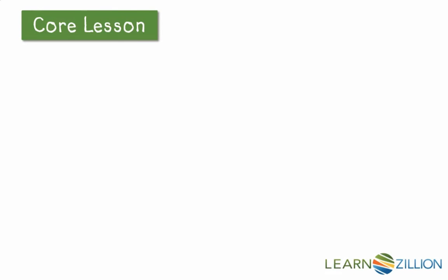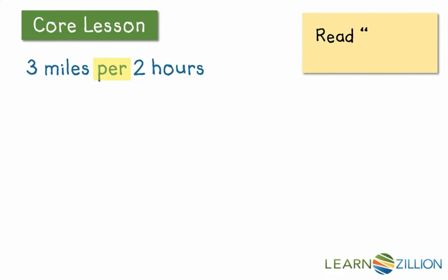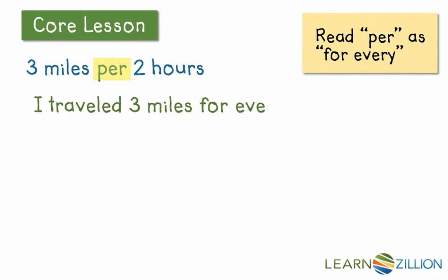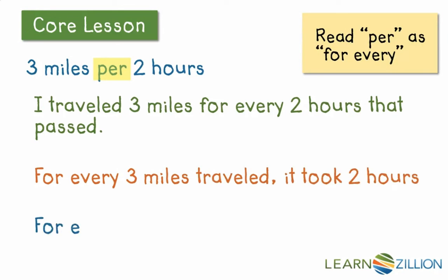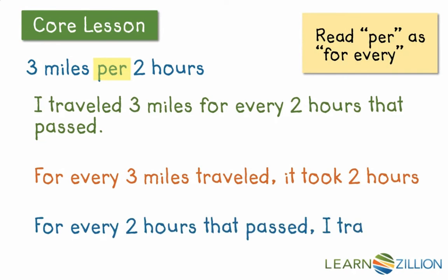Another difference you might have noticed between rates and standard ratios is the word "per" — three miles per two hours. Per is a perfectly fine word on its own, but I like to think of "per" as "for every." So in my mind, three miles per two hours becomes: I traveled three miles for every two hours that passed. Or, for every three miles traveled, it took two hours. Or, for every two hours that passed, I traveled three miles. Each "for every" takes the place of "per."